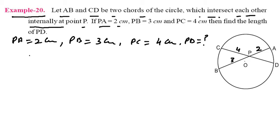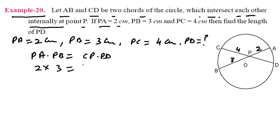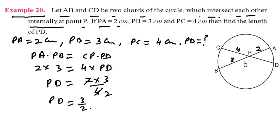By the property of circles, when two chords intersect internally or externally, the formula is PA into PB equals CP into PD. So putting values: 2 into 3 equals 4 into PD. Therefore PD equals 2 into 3 divided by 4 equals 6 divided by 4 equals 1.5 centimeters. That is your answer.